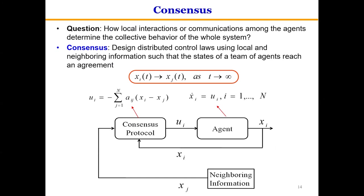The formation control design is based on consensus methods. Consensus control design is one of the major research areas in multi-agent systems. For a team of agents, the objective of consensus control is to enable the states of the agents to reach an agreement. The consensus protocol is designed using the local state xi, neighboring state xj, and the connection graph information aij.